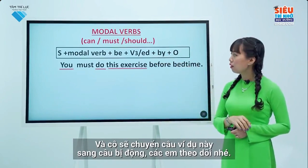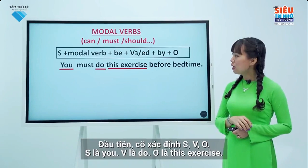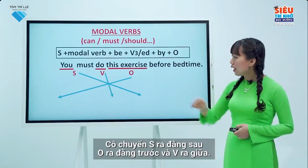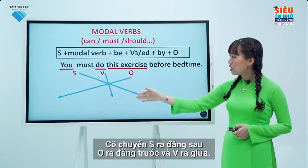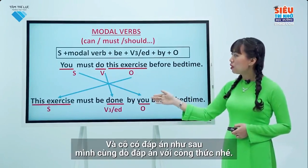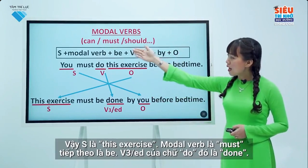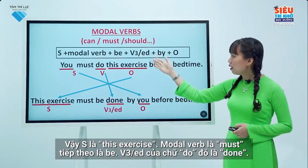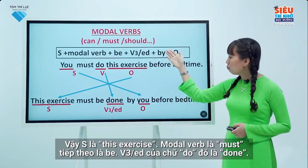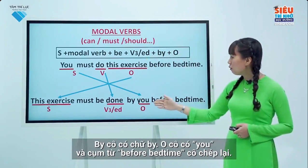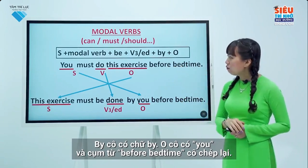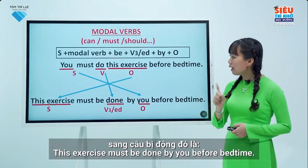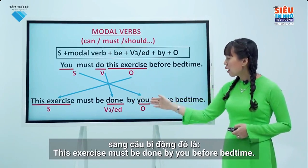First, I determine: subject is you, verb is do, object is this exercise. Moving the object to the beginning, I get: subject — this exercise; modal verb — must; be; done (verb 3 of 'do'); by you; before bedtime remains the same. So the passive form is: 'This exercise must be done by you before bedtime.'